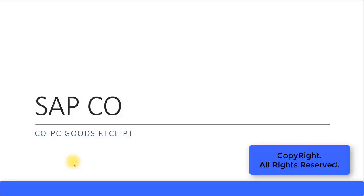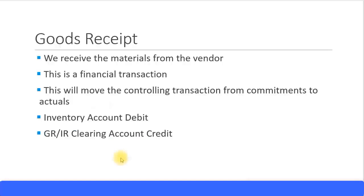Continuing with our product costing presentations, let's look at goods receipt. We created the purchase order and submitted it to the vendor, stating we want to purchase materials at a particular price to be delivered on specific dates. Now the vendor has delivered the items, which means we are receiving the materials. The day you receive the goods, that receiving process is called goods receipt.